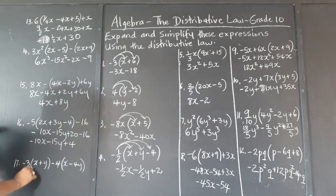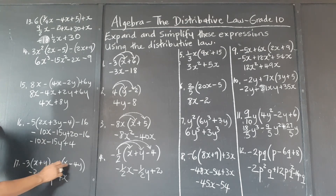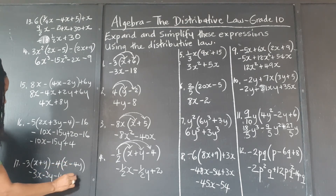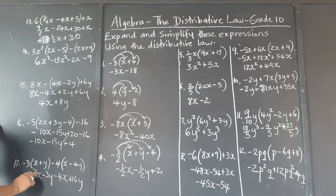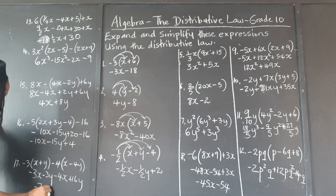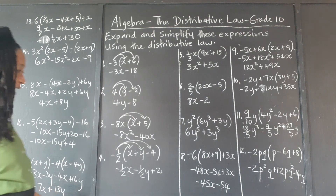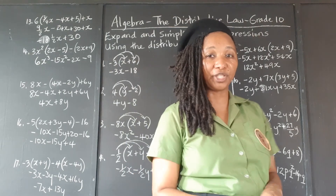Negative 3 times x is negative 3x. Negative 3 times y is negative 3y. Negative 4 times x is negative 4x. Negative 4 times negative 4 is positive 16. We can group the x's: negative 3x minus 4x is negative 7x. And negative 3y plus 16y is positive 13y. That is our final answer — we can't combine the x's and the y terms as they are two different terms.